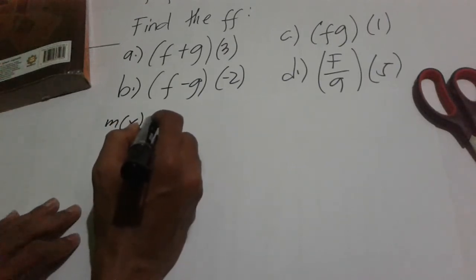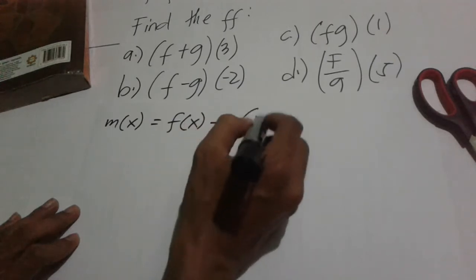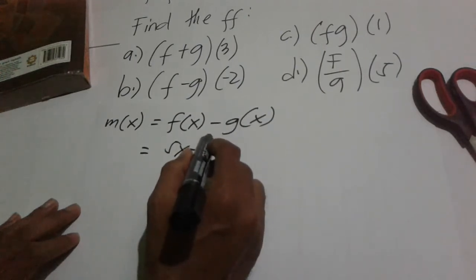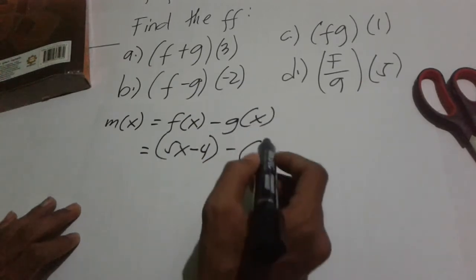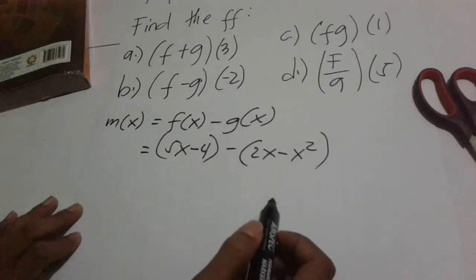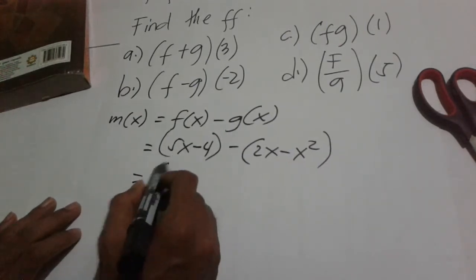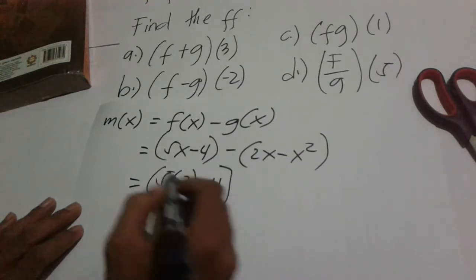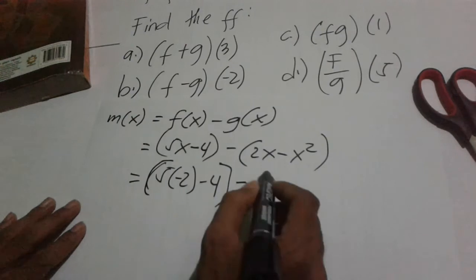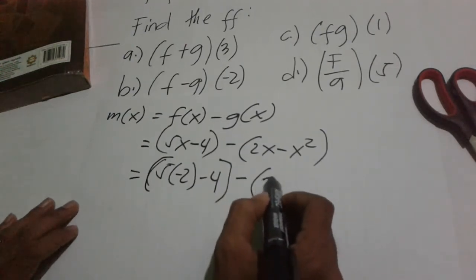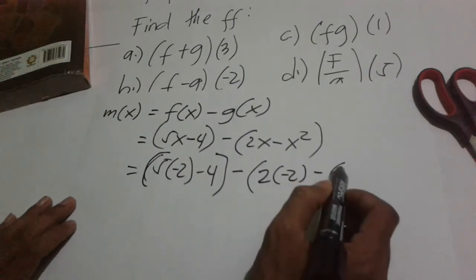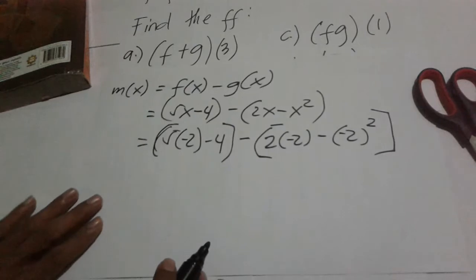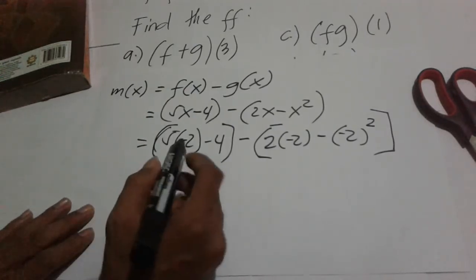For letter (b), m(x) = f(x) - g(x). The value of f(x) is 5x - 4, minus g(x) which is 2x - x². Substituting the value, we have 5 times (-2) minus 4, minus [2 times (-2) minus (-2)²].